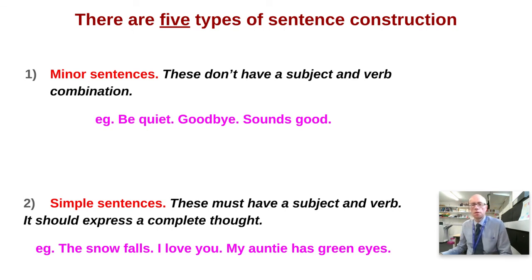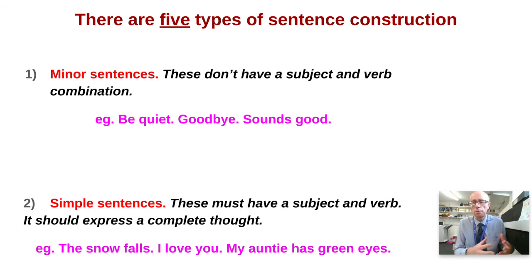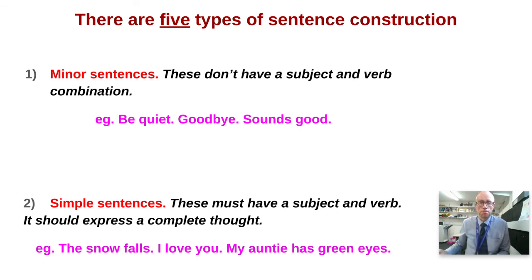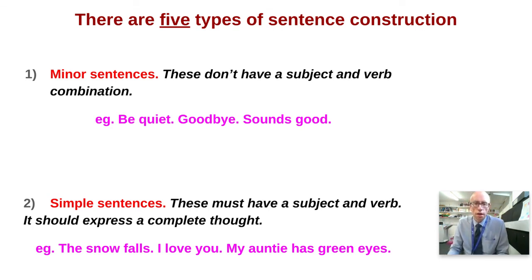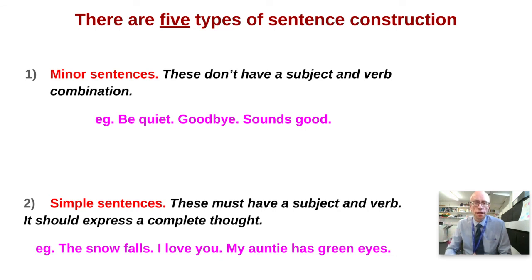First of all, we have minor sentences. These are things like 'Be quiet', 'Goodbye', 'Sounds good' — all elliptical, so they're missing something. A minor sentence therefore doesn't have a subject — by which I mean not a topic but an agent that does the verb — and it doesn't have a main verb either. The more minor sentences you have in a text, the lower the level of formality. At this point it's good to bring in Joos, who came up in the 1960s with his five levels of formality. Lots of minor sentences might indicate a casual or intimate level of register.